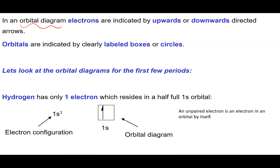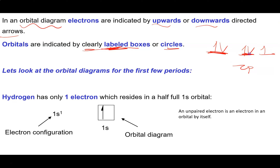An orbital diagram often accompanies an electron configuration to indicate how electrons are spinning. Electrons are shown with upward or downward arrows, and orbitals are indicated by boxes, circles, or lines labeled with the subshell. For example, a 2p subshell with five electrons would show three boxes with the appropriate arrows.